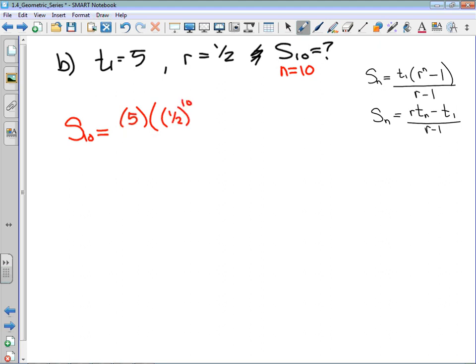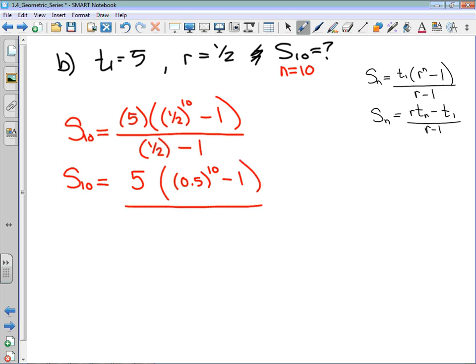Minus 1, all divided by 1/2 minus 1. There's nothing wrong with using 0.5 instead of 1/2. I'm going to clean it up a little bit. The sum of 10 terms is 5 times 0.5 to the power of 10 minus 1, divided by—1/2 is 0.5—0.5 minus 1 is negative 0.5.